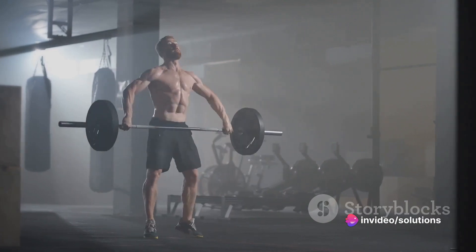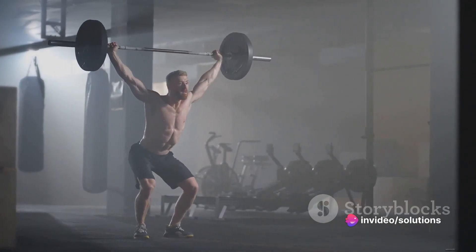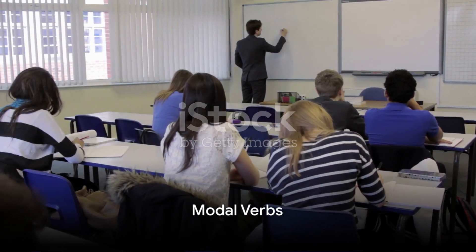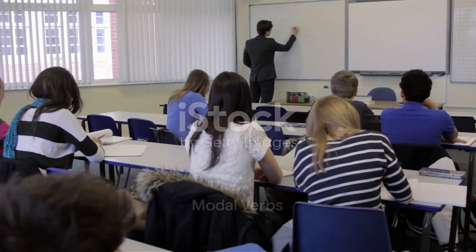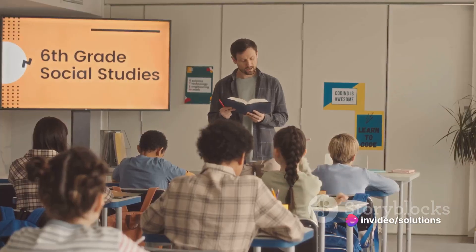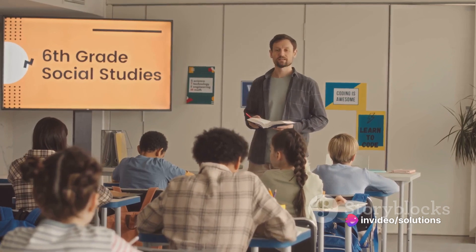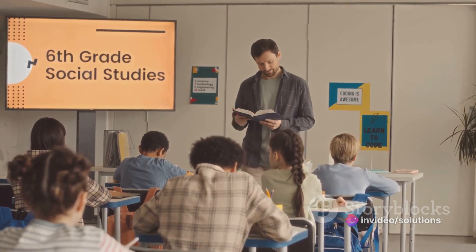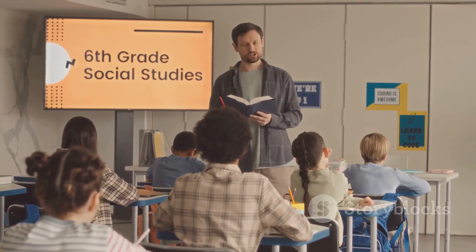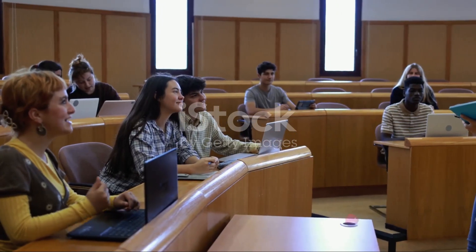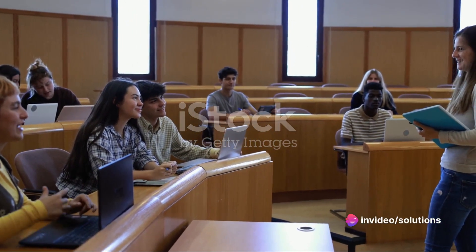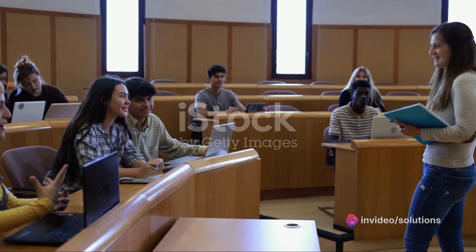Auxiliary verbs are the supporting actors in our sentences, helping main verbs express complex ideas. Finally, we have modal verbs — the verbs that express necessity or possibility. These verbs are special because they don't just tell us what's happening, but rather they tell us the speaker's attitude towards what's happening. They provide additional information about the function of the main verb that follows them. Modal verbs include can, could, may, might, shall, should, will, would, and must.